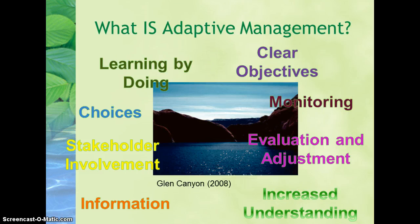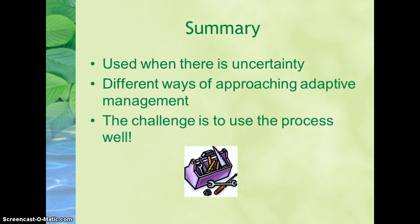Uncertainty can be expressed using testable models, and a monitoring system can be established to reduce uncertainty. One case study on adaptive management that may be worth your review is that of Glen Canyon Dam — a story of water, recreation, energy, and biodiversity. In summary, application of an adaptive management strategy makes sense when there is uncertainty about the consequences of iterative decision-making. There are different ways of approaching adaptive management depending on the emphasis placed on various phases of the process. While there is some thought that adaptive management is costly or time-consuming, it is used all of the time. The challenge is to use the process well, and adaptive management should become a tool in your environmental management toolbox that is used to make decision-making more effective.